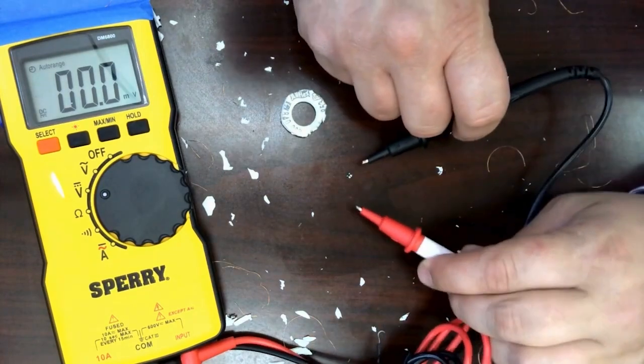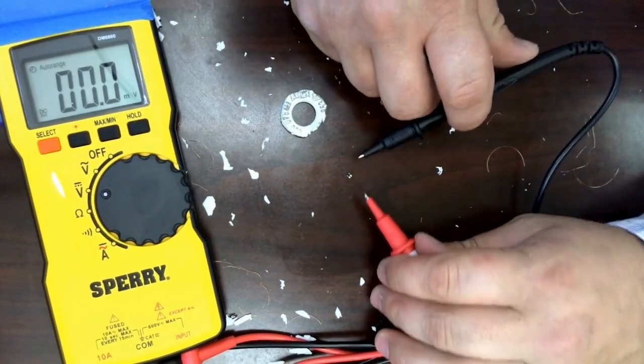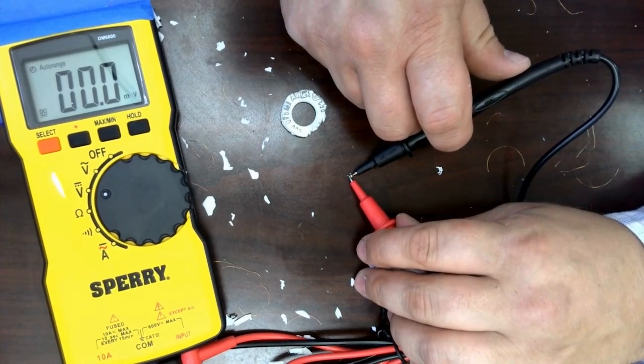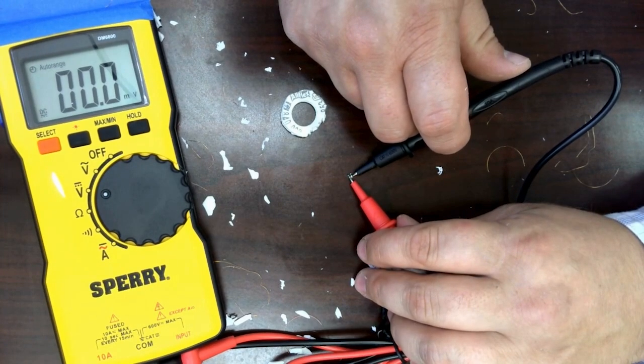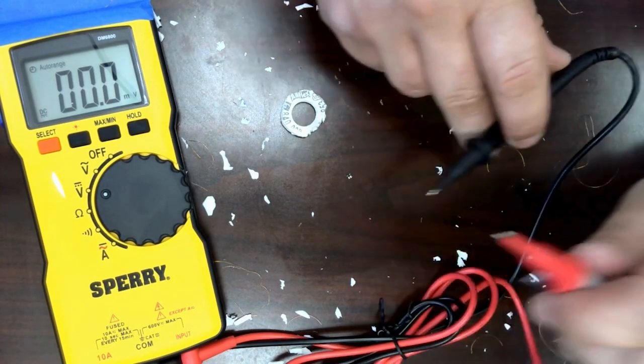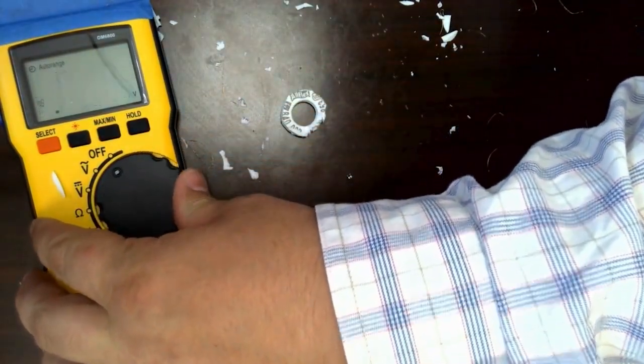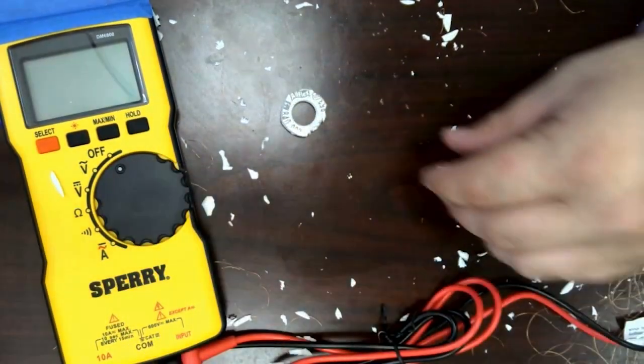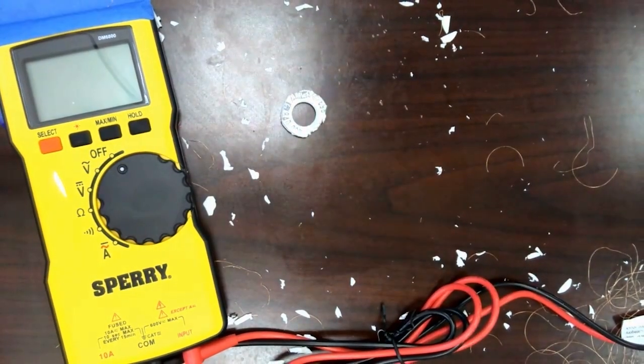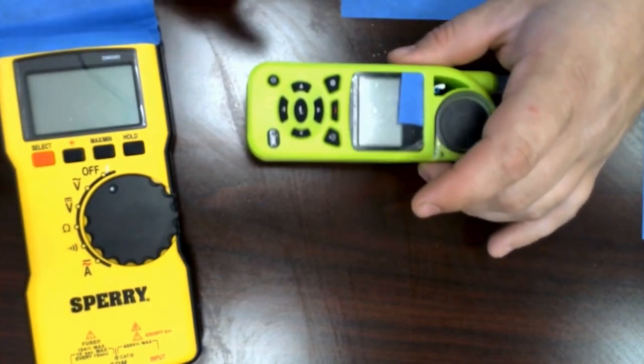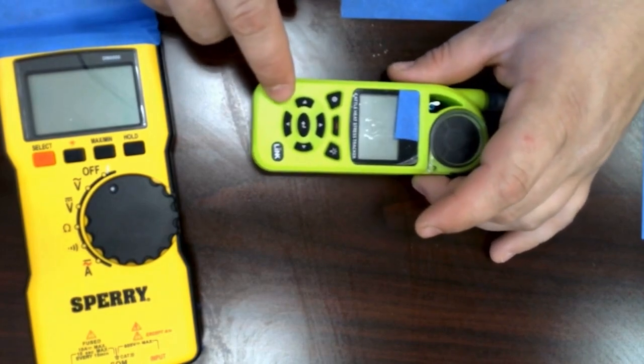Now that we have it completely removed from the tag we will put our multimeter to the transponder to see if we get a reading. As you can see here I was able to connect both points of the multimeter to the transponder and not get a reading whatsoever from the transponder of the tag number. This indicates that there is no power source to the tag.